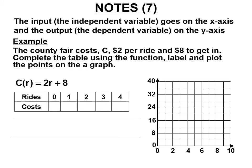For the county fair example, rides R goes on the horizontal axis and cost C goes on the vertical axis — input always goes on the bottom, dependent variable always goes on top. With $2 per ride and $8 to get in: 0 rides is $8, 1 ride is $10, 2 is $12, 3 is $14, 4 is $16. Plot those points and draw a line through them.